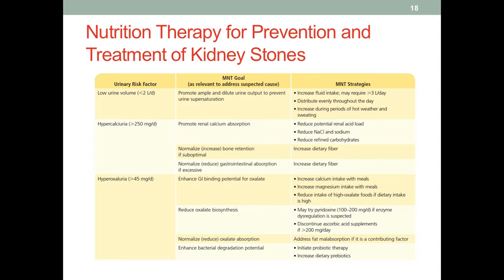This table from the textbook nicely summarizes nutrition therapy strategies and goals that target risk factors for kidney stones. As mentioned earlier, the value of dietitian services for kidney stone patients is not during an acute attack — when they have a history and want to prevent future attacks, that's when we come into play. During the acute attack, it's more the physician's job to alleviate the pain or use shockwave therapy to break the stone into smaller pieces. Please review this slide and the next one, paying attention to the relationship between different risk factors, specific goals, and the MNT strategy.